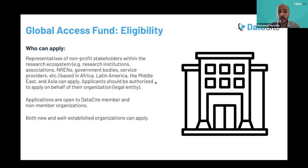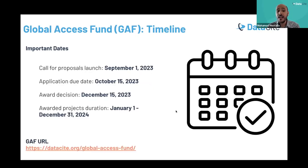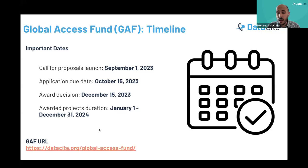Who can apply? Representatives of non-profit organizations such as universities, NRENs, and governmental bodies within Africa, Latin America, Middle East, and Asia can apply. Applications are open to DataCite members and non-members alike, and both new and well-established organizations can apply. The call for proposals was already launched on September 1st. The application due date is October 15th, and we expect to announce results by December 15th. The project will run throughout 2024 from January to December. Please make sure to provide the completed budget, tasks, timeline, and sustainability plan forms, as there is no second round of revisions.